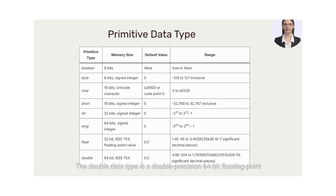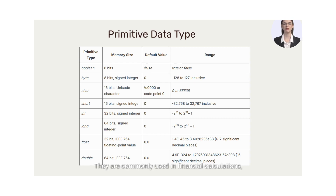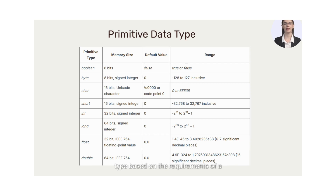The double data type is a double-precision 64-bit floating-point number in Java. It can store fractional numbers with precision up to 15 decimal digits. Doubles are commonly used in financial calculations, scientific computations, and precise measurements. In conclusion, by selecting the right data type based on the requirements of a program, developers can ensure efficient memory usage and accurate representation of data.